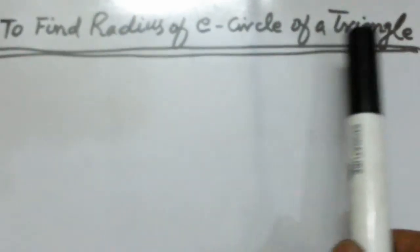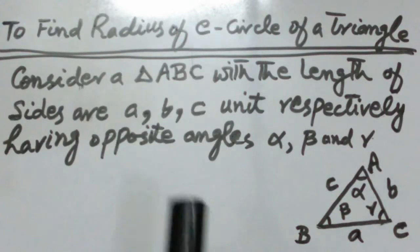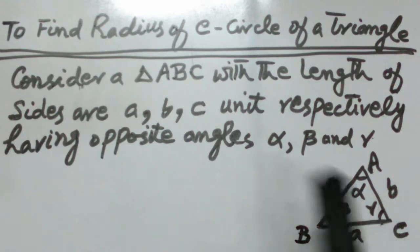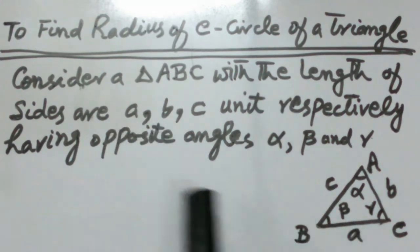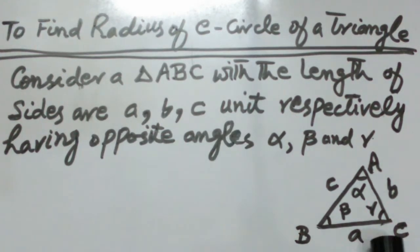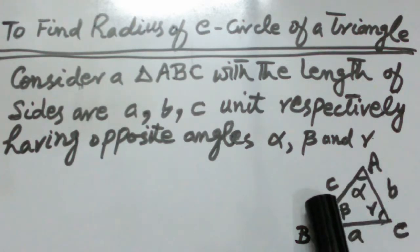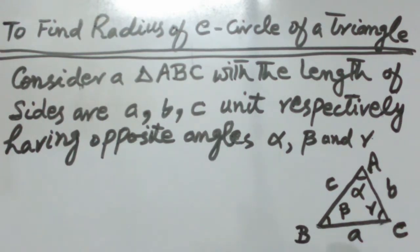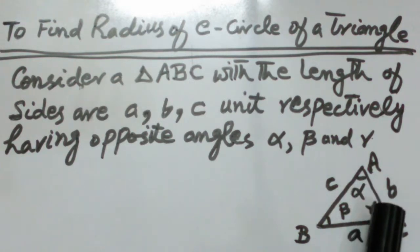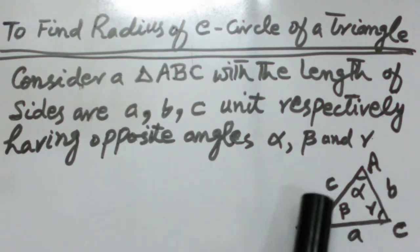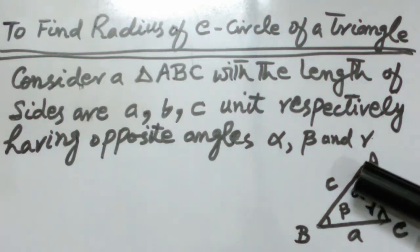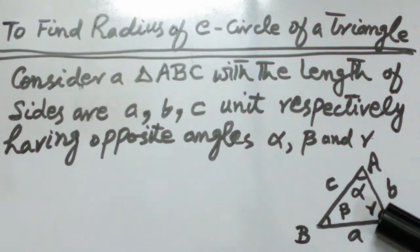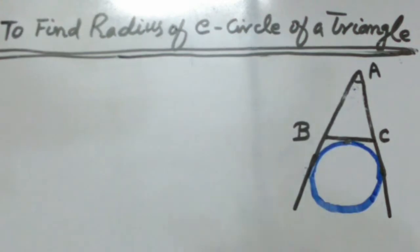To find the radius of each excircle of a triangle, consider triangle ABC with sides of length a, b, and c units respectively. The angle opposite to side a is alpha, the angle opposite to side b is beta, and the angle opposite to side c is gamma.